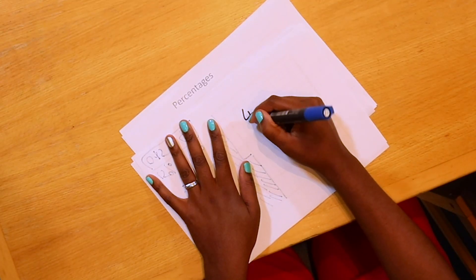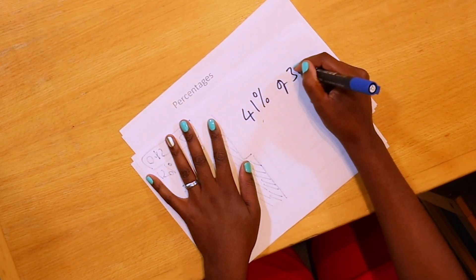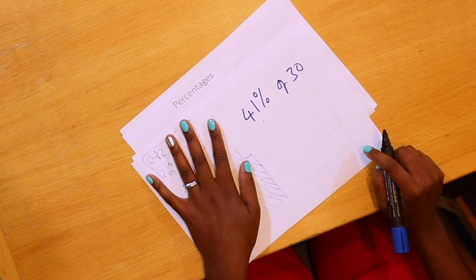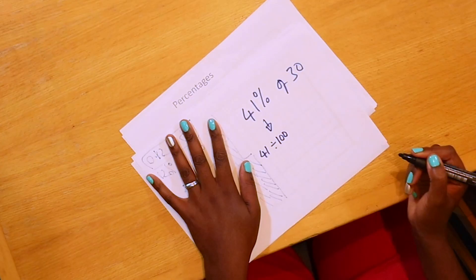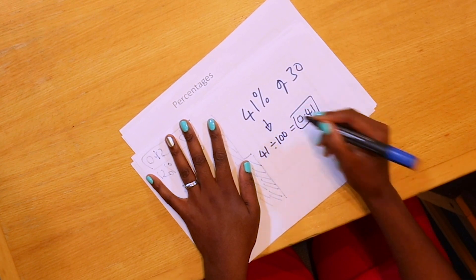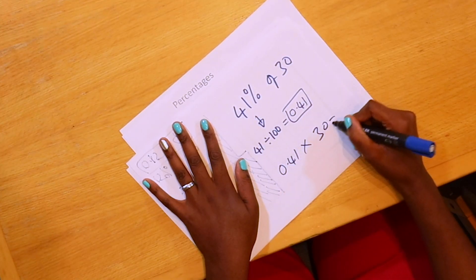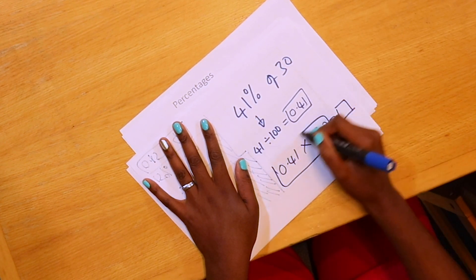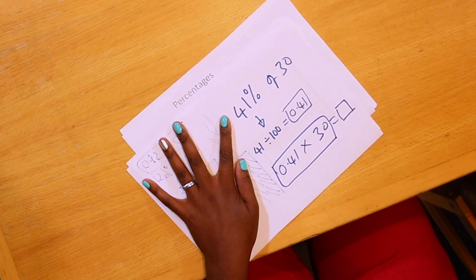If I said to you, what is 41% of 30? What would my calculation be in the calculator? So 41% is 41 out of 100, which is 41 divided by 100. Brilliant. Which is 0.41. So that's your multiplier. And then our calculation is 0.41 multiplied by 30. You put that into your calculator and you've found 41% of 30.